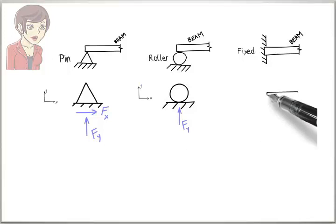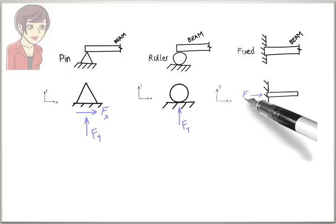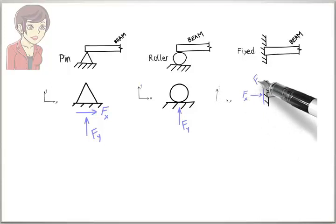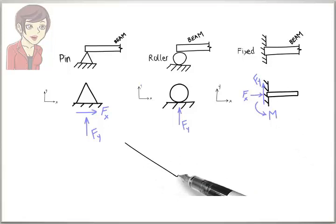A fixed support has three reactions, a force in the x-direction, a force in the y-direction, and a bending moment about the z-axis. To clarify, let's look at two examples.